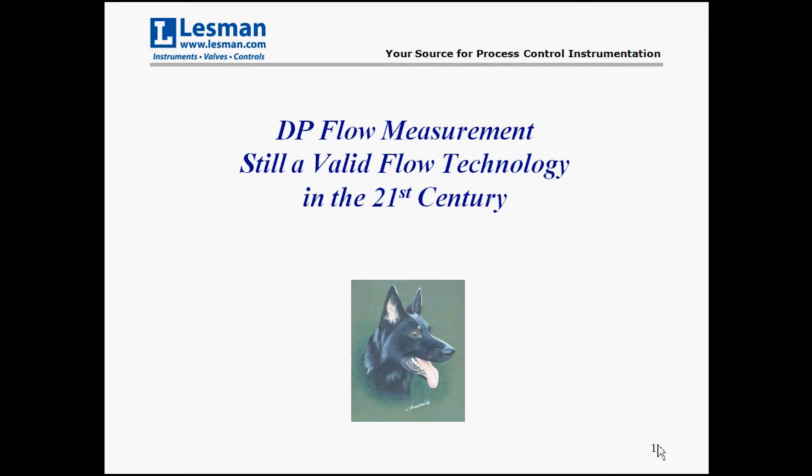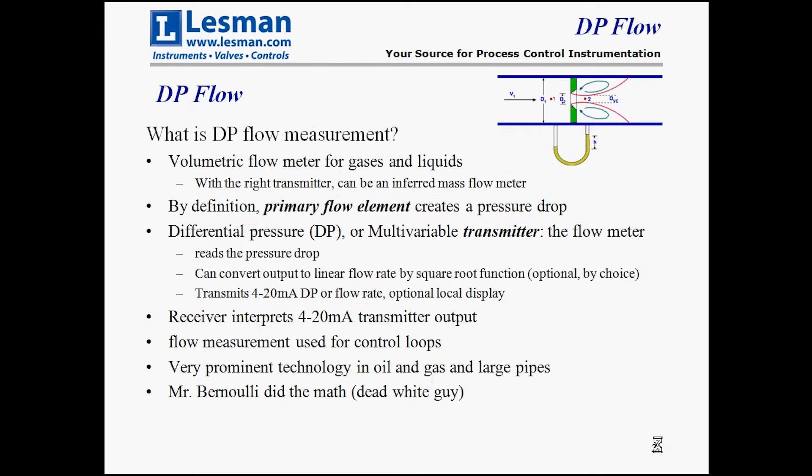Let's review DP flow measurement. DP is a volumetric flow measurement for gases and liquids, and with the right transmitter you can actually infer a mass flow measurement. By definition, you have to have a primary flow element inside the pipe that creates a pressure drop. That pressure drop is read by a differential pressure or multivariable transmitter. It converts that signal to either a linear flow rate with a square root function, or you can get the DP pressure out directly and process it elsewhere.